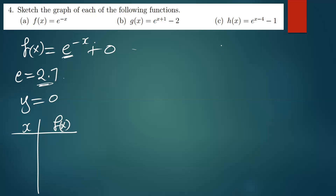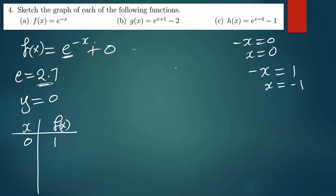We want a value that makes the power zero. If we equate the power to zero, negative x equals zero, so x equals zero. Plugging in: e to the power zero equals one. So our first coordinate is (0, 1). For the second point, we equate the power to one: negative x equals one gives x equals negative one. Then e to the power negative negative one is e to the power one, which is just e. So when x is negative one, f of x equals e.